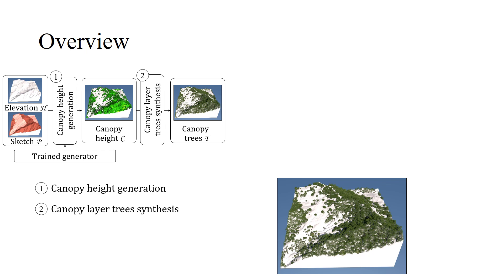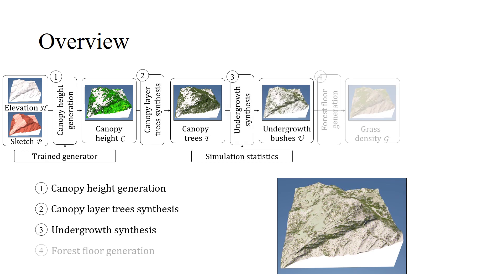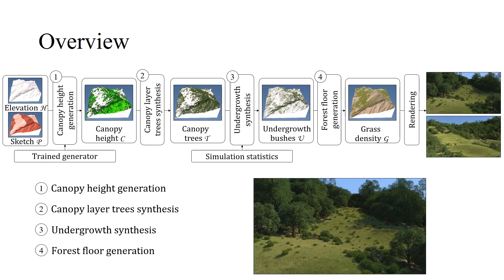The position of trees are obtained using a specific synthesis step. We use statistical outcomes from an undergrowth simulation to define the undergrowth. The final layer, consisting of grass and forbs, is generated according to the upper layers. We combine all layers to obtain the final images.